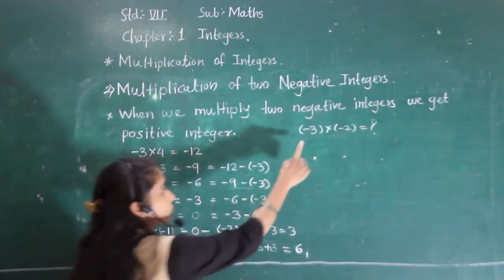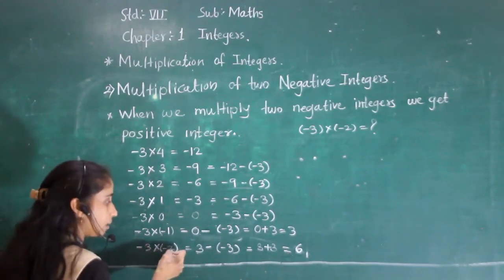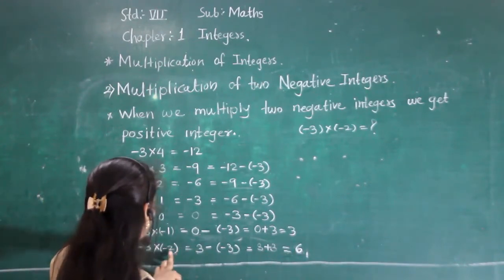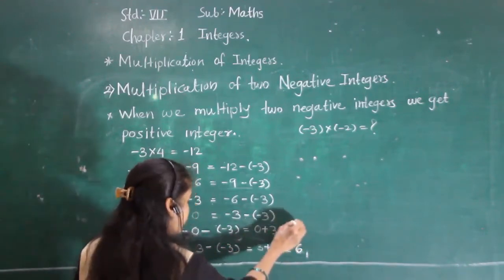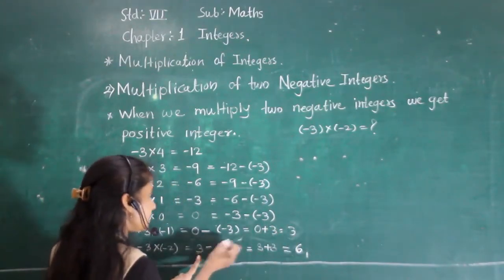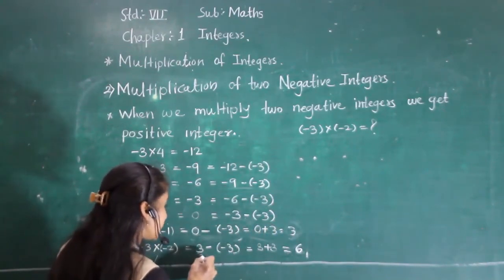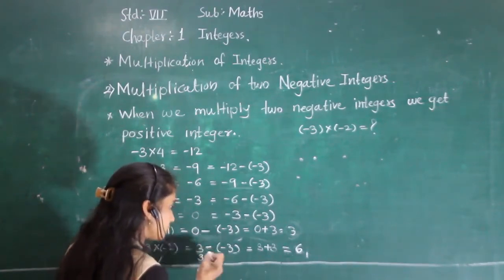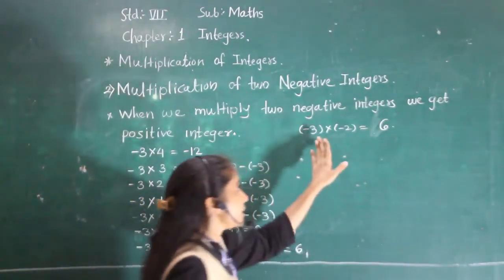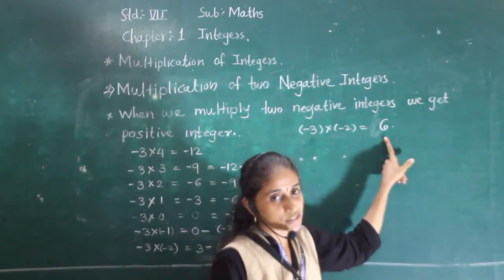Next: minus 3 into minus 2. We got 3 from before, so 3 minus minus 3 gives 3 plus 3 equals 6. So the answer is 6. When we multiply two negative integers, we get positive integers — in multiplication two negative integers give a positive integer.